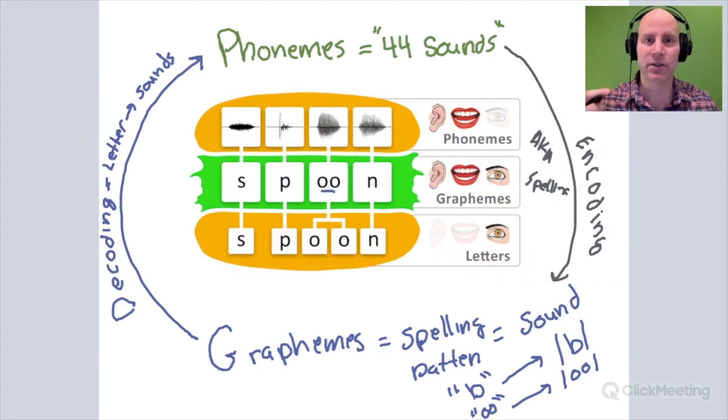So when a child takes sounds in oral language and matches them up with their letter patterns or graphemes, like in the word spoon, S, P, O, N, that's made up of an S, a P, a double O, and an N. This is spelling or this is encoding.